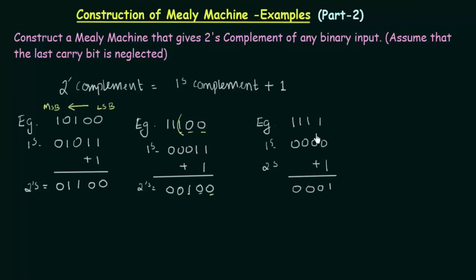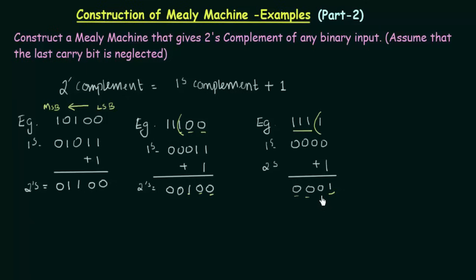Let's see the example where there are no 0's at all — just 1 1 1 1. The first 1 is left as 1, and then the rest of the bits are complemented. So the first 1 you see is left as 1, and then the rest of the bits are complemented.